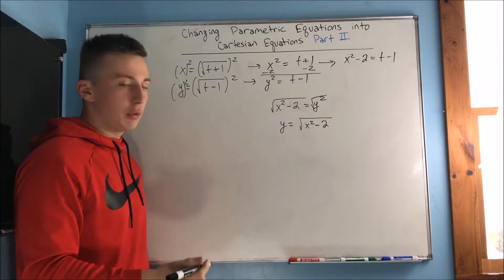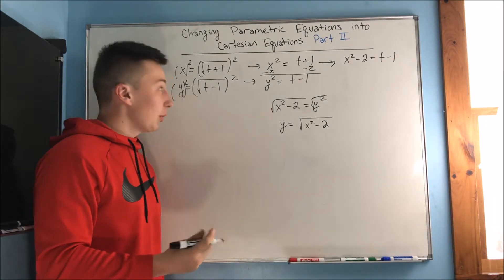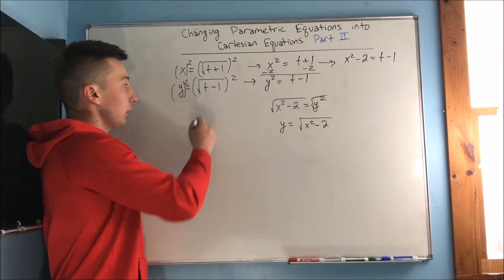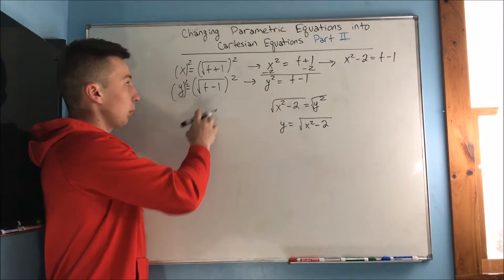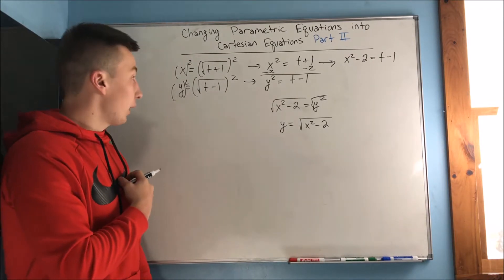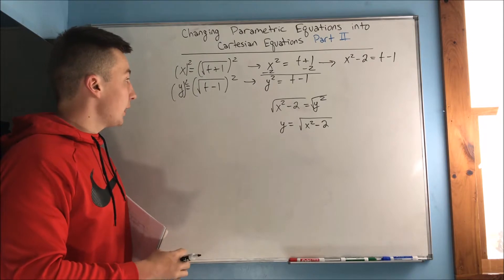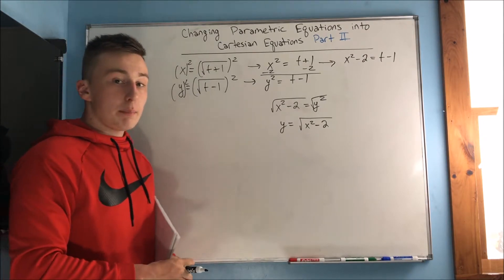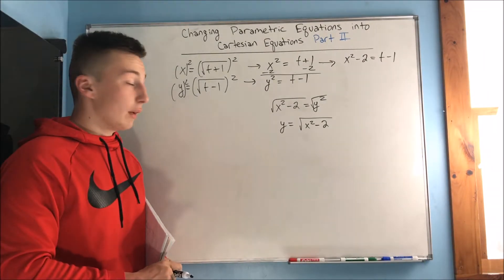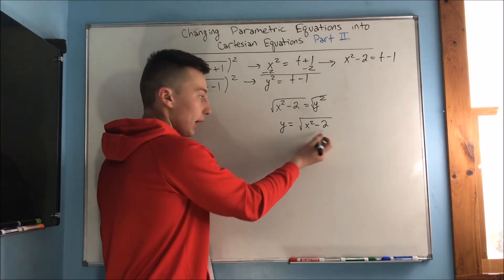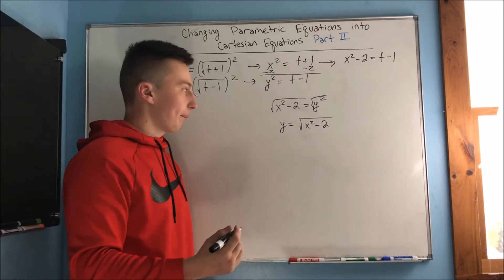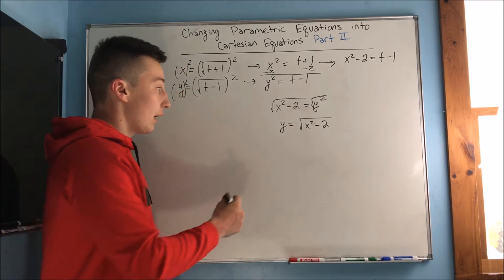When you take the square root you should include a plus or minus. Well, look at our original parametric equation with our y: y equals the square root of t minus 1. That can't ever be a negative value, so this y cannot ever be a negative value either. That means we're just going to have this as our Cartesian equation.